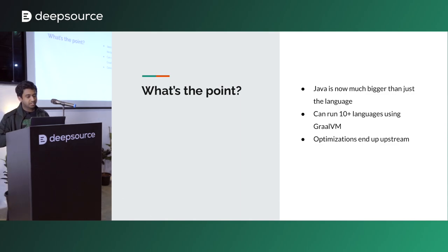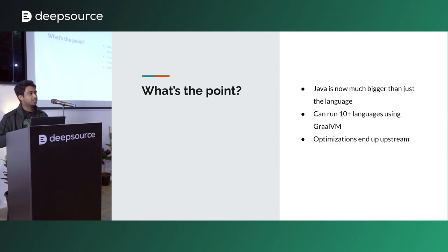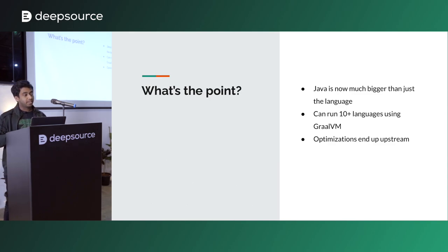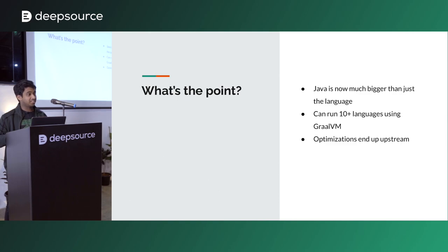My thinking here is Java is no longer just Java the language, or just the JVM. It's grown a lot bigger than what it started as. It can now run three languages on the JVM itself — Kotlin, Java, Scala — but through GraalVM, it can run around 10-plus languages: Python, R, JavaScript, even C and C++. That is amazing. It is like a compilation target in itself.